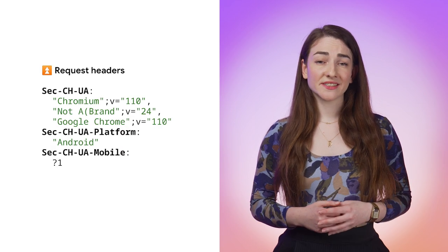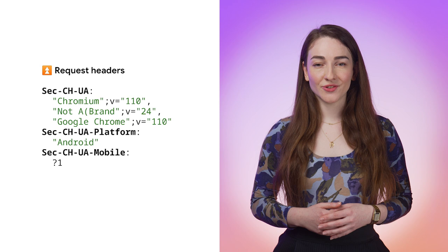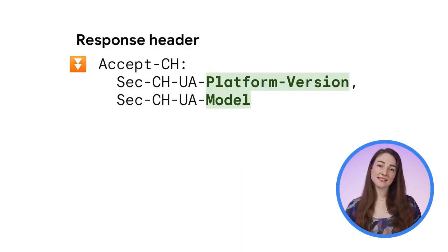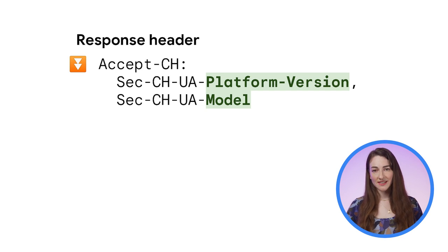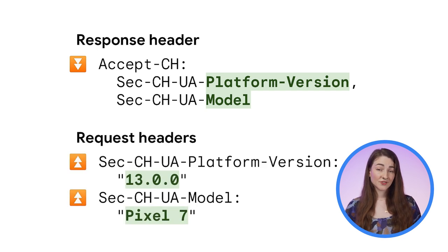You may have already seen the default headers being sent with the sec-ch-ua prefix. You can use the accept-ch header in your response to ask for more data — in this case, you can ask for platform version and model to get that Android version and device type back in subsequent requests.